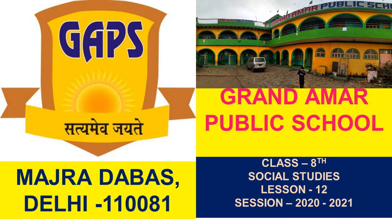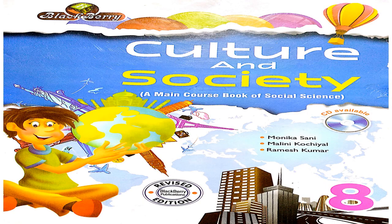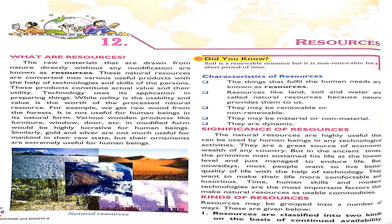Hello class, this is your social studies and today I am going to start your new chapter. As you can see on your screen, this is your new book of social science — social studies, culture and society. Open it right now. This is chapter number 12: Resources. Resources are the raw materials that are drawn from nature after a long time, and after some time we can take and remove them — that is called resources.